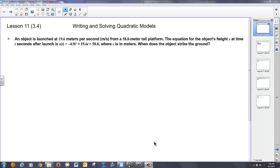So we've got an object being launched at 19.6 meters per second from a 58.8 meter tall building and the equation's height is going to be given to you in a function here. So s represents the height at any given time t. We want to know when does the object strike the ground. So let's just think about this. If you shoot an object from 58 feet off the ground, it travels in a parabolic fashion and then comes back down.